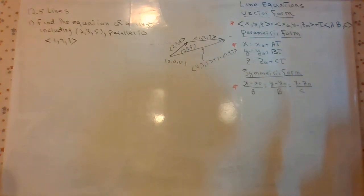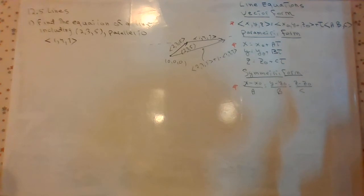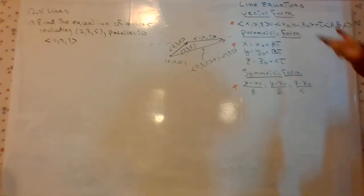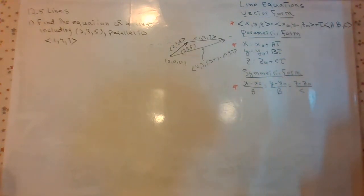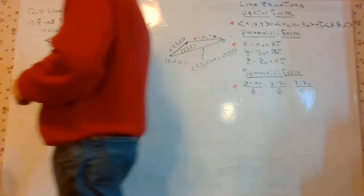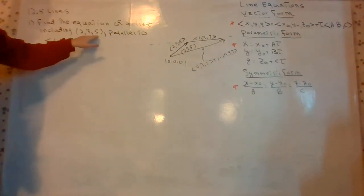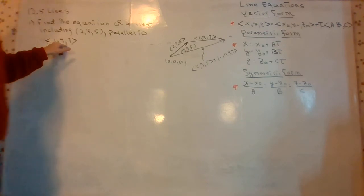So we're going to go through a couple of fairly straightforward problems, setting up line equations in these forms. Then the second part of this problem set will go through some basic plane problems as well. We have an equation of a line including the point 2, 3, 5 parallel to the vector 1, 4, 7.